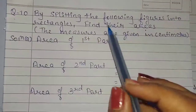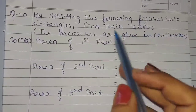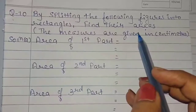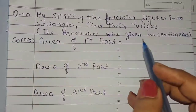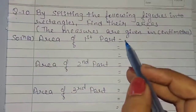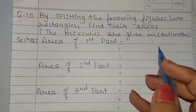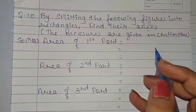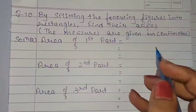Question number 10. By splitting the following figures into rectangles, find their areas. The measurements are given in centimeters. So students, let us see first of all figure A.